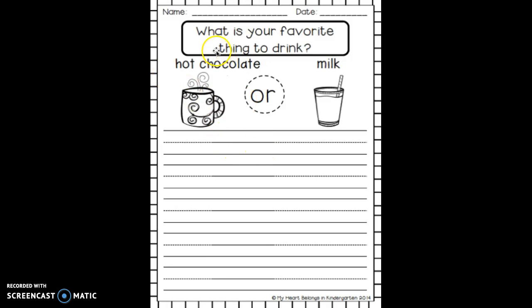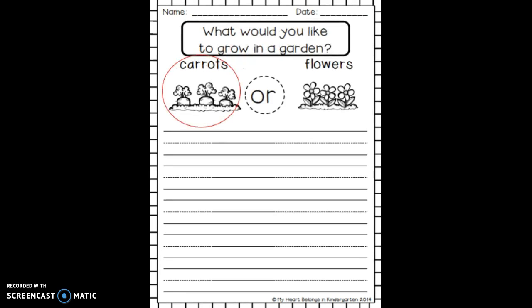This week you're going to be working on this writing paper. The question for you is: what is your favorite thing to drink — hot chocolate or milk? You need to think about which one is your favorite and then circle it. Pause the video and do that now.